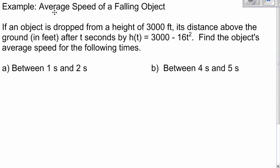Here's another example, average speed of a falling object. If an object is dropped from a height of 3,000 feet, its distance above the ground in feet after t seconds is given by the equation h of t equals 3,000 minus 16t squared. Find the object's average speed for the following times. So between 1 and 2 seconds means a is 1, b is 2.